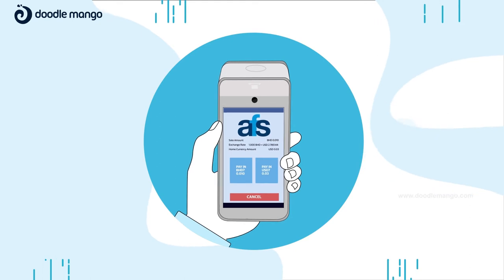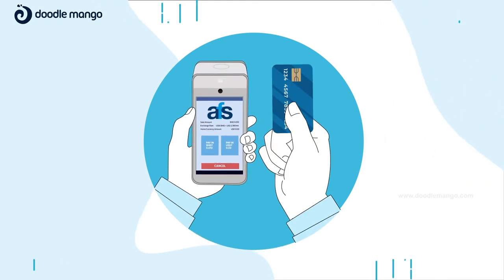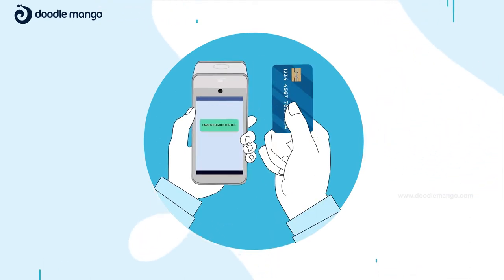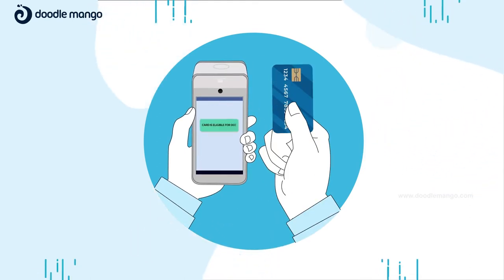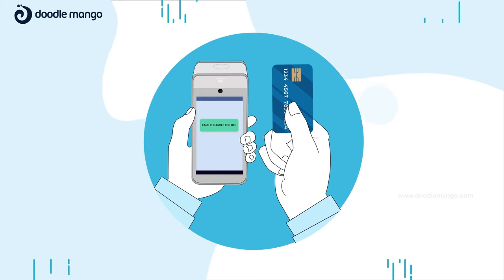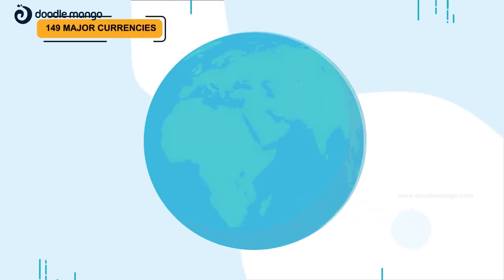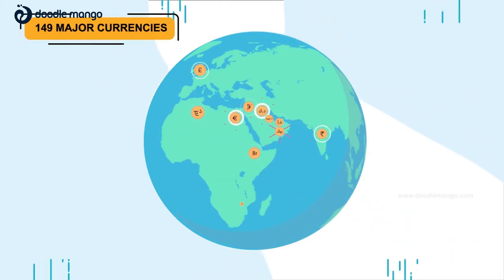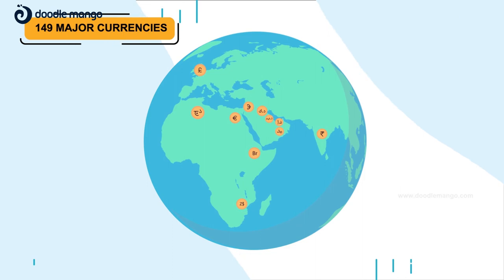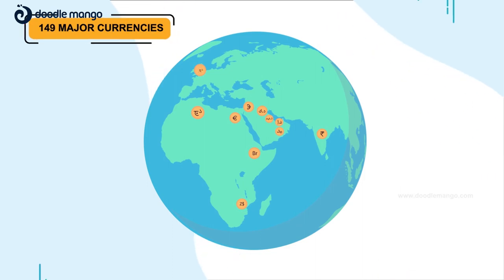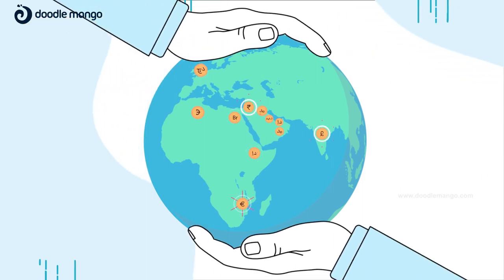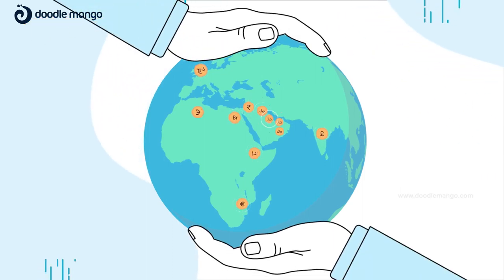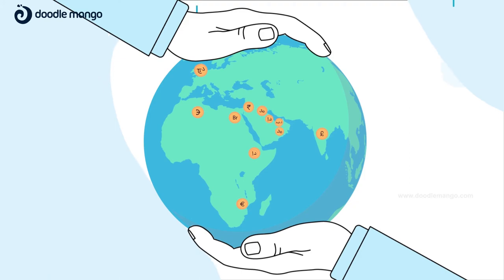AFS Smart POS terminals automatically recognise whether your customer's Visa or MasterCard is eligible for DCC. And with over 149 major currencies offered, it instantly converts the transaction amount into the currency of their choice.